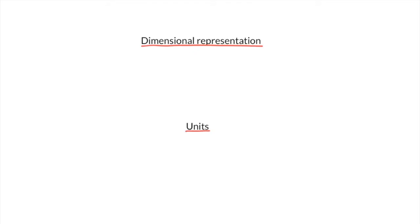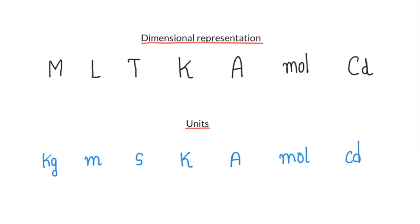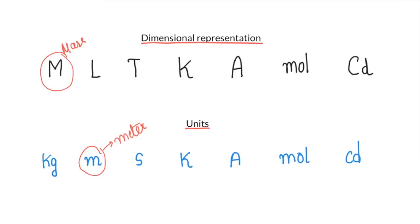Students usually get confused between this M and this m. They are entirely different — this M represents meter (the unit), and this M represents mass (the dimensional notation). So be clear: dimensional representations and units are different things.